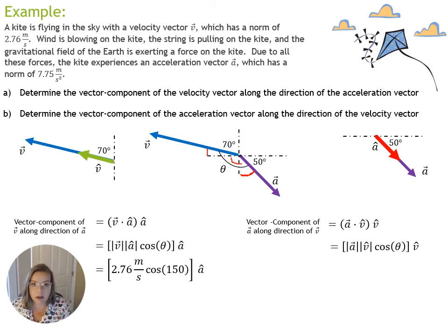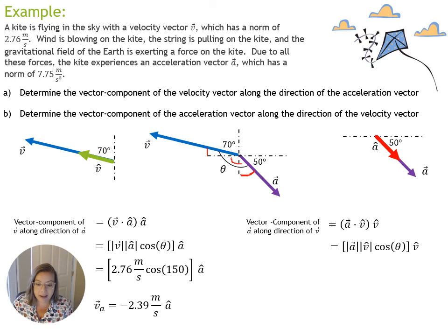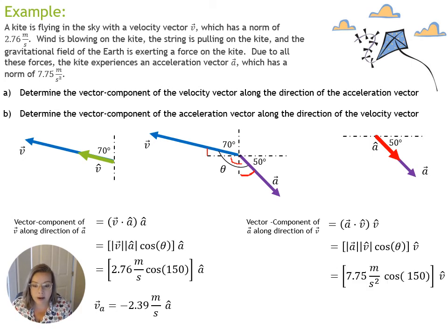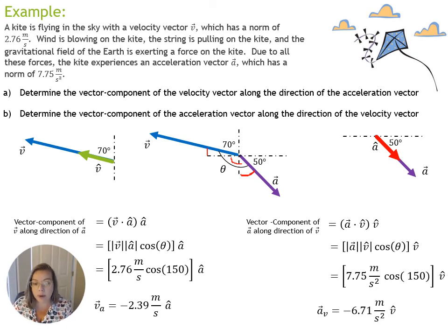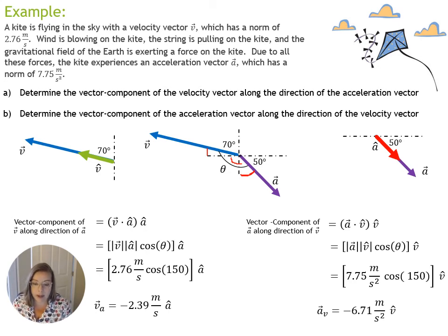Plugging in for the vector component of v along the direction of a, I get negative 2.39 meters per second times a-hat. That's the vector component. If asked for the scalar component only, the answer is just negative 2.39 with no a-hat. For the vector component of a along the direction of v, I plug in the norm of a and cosine of 150 degrees, giving a result times v-hat. The expression is a vector, confirmed by the unit vector factor.